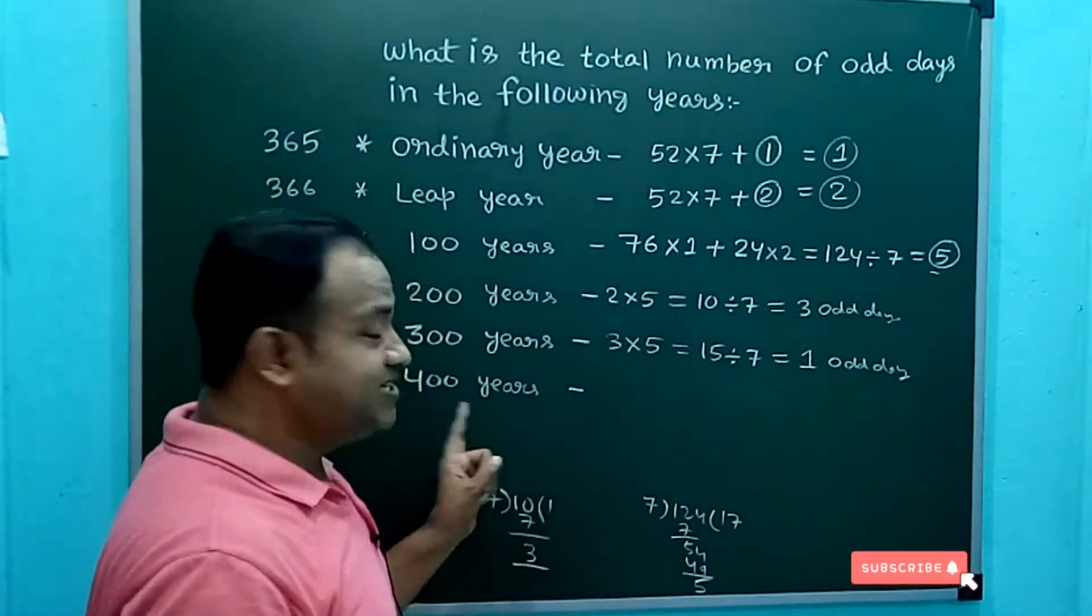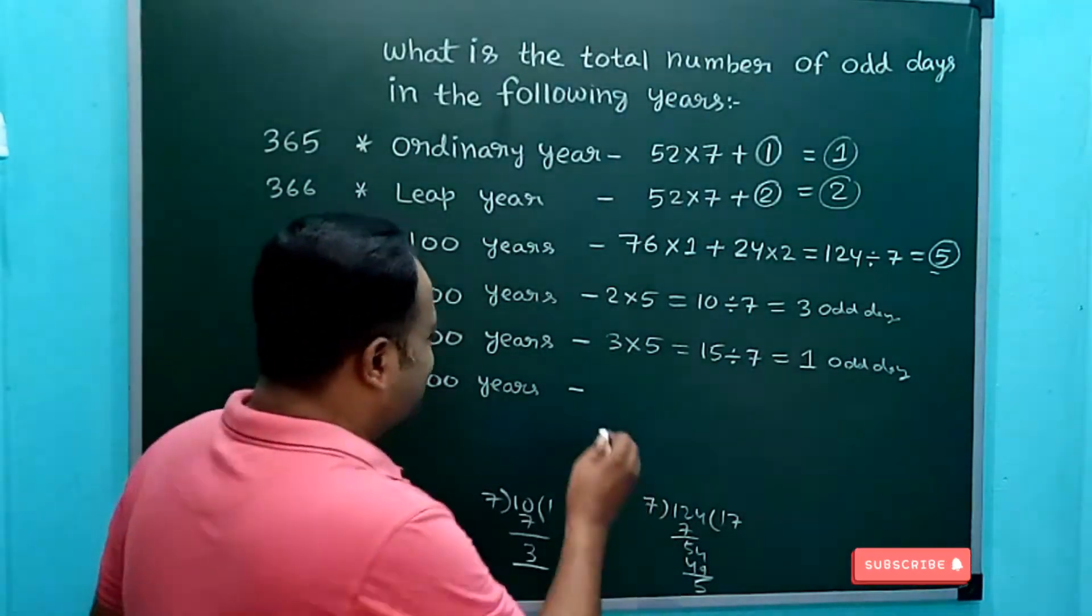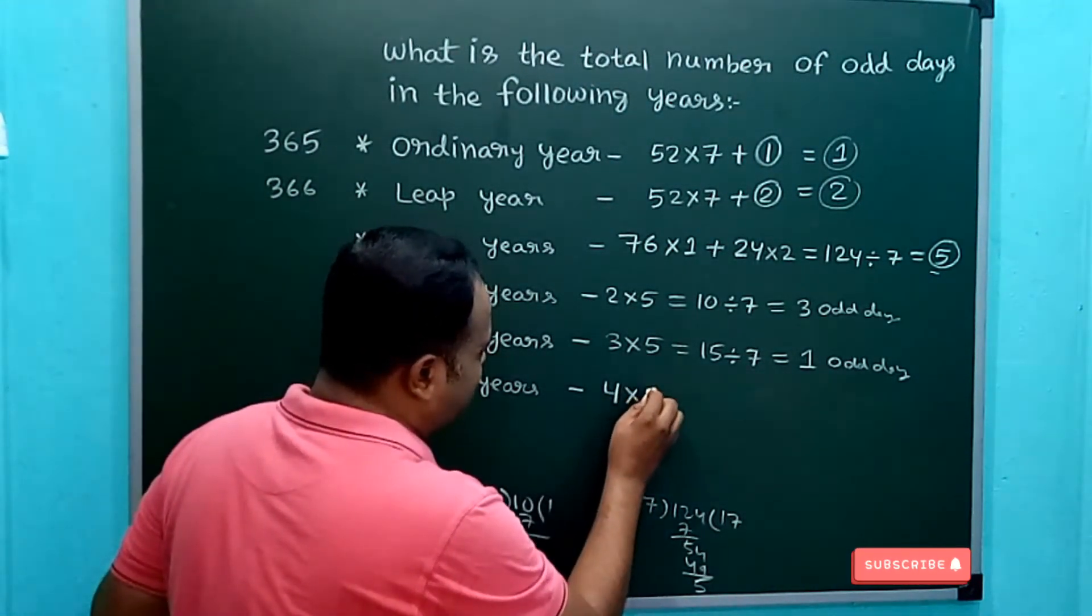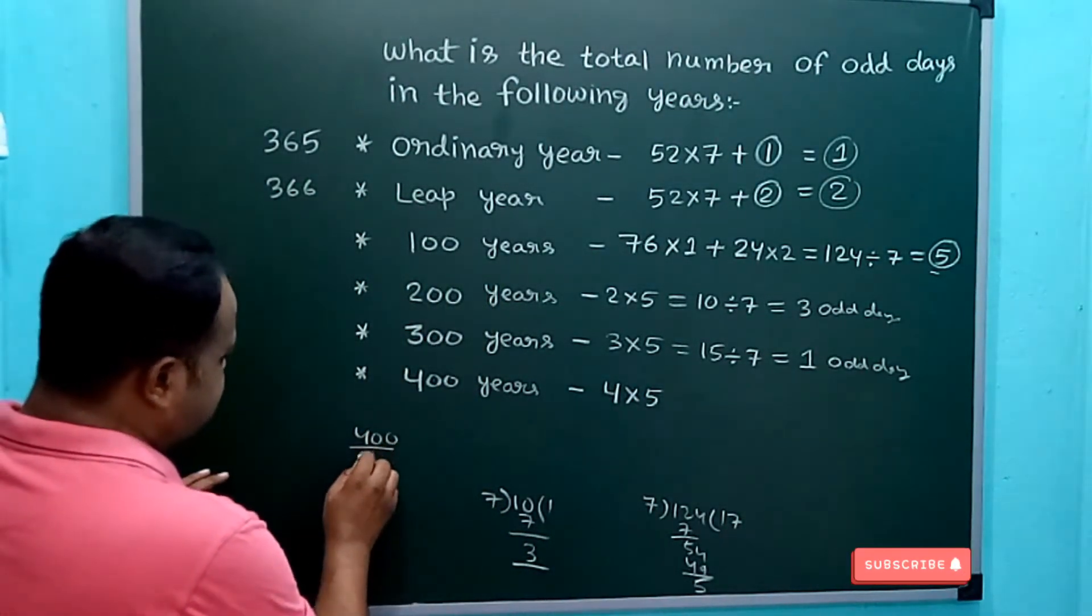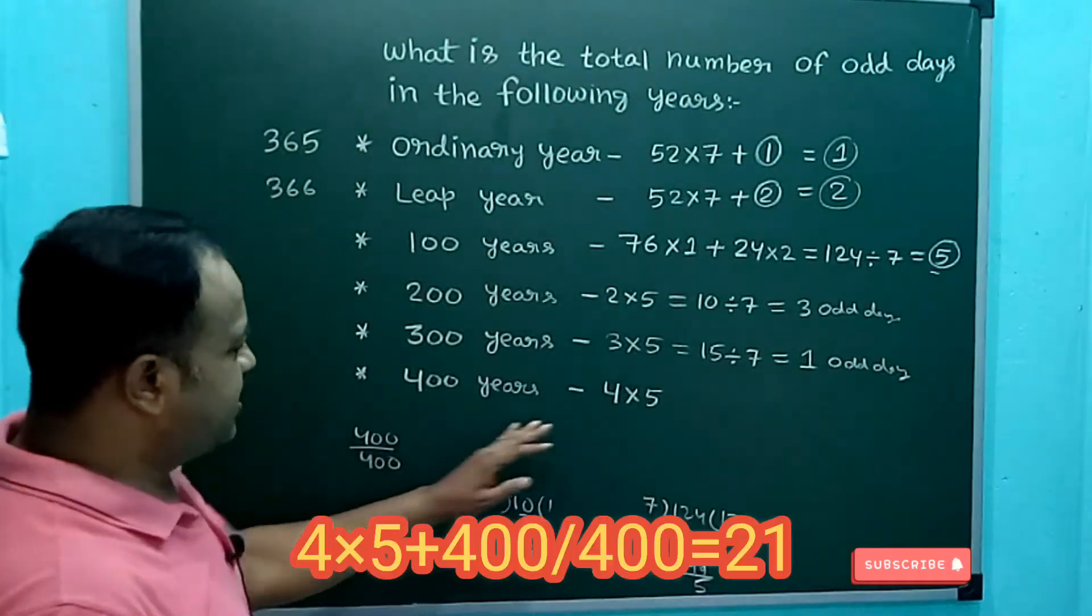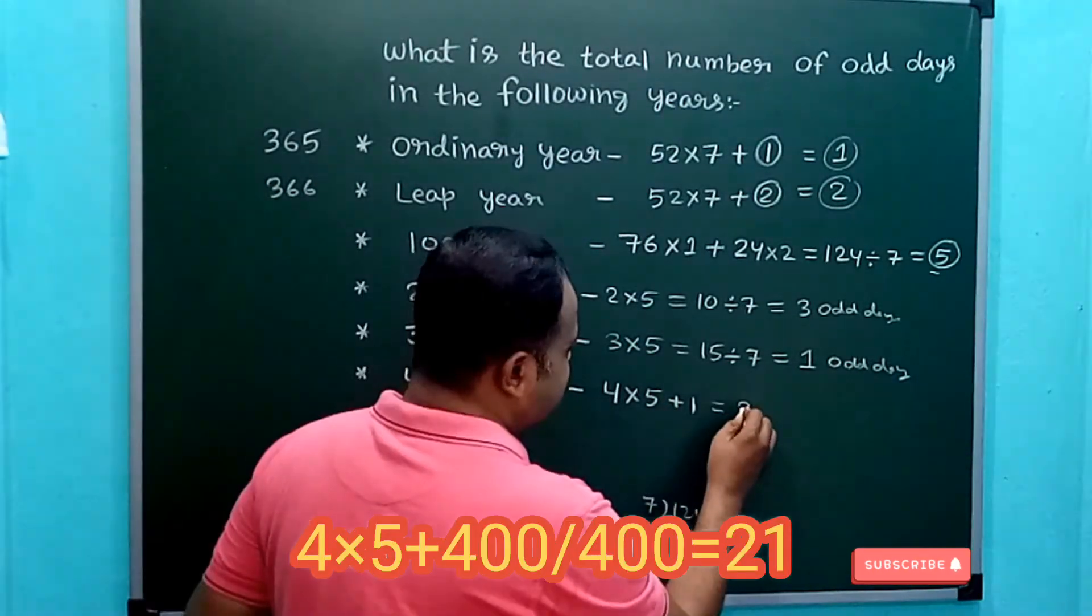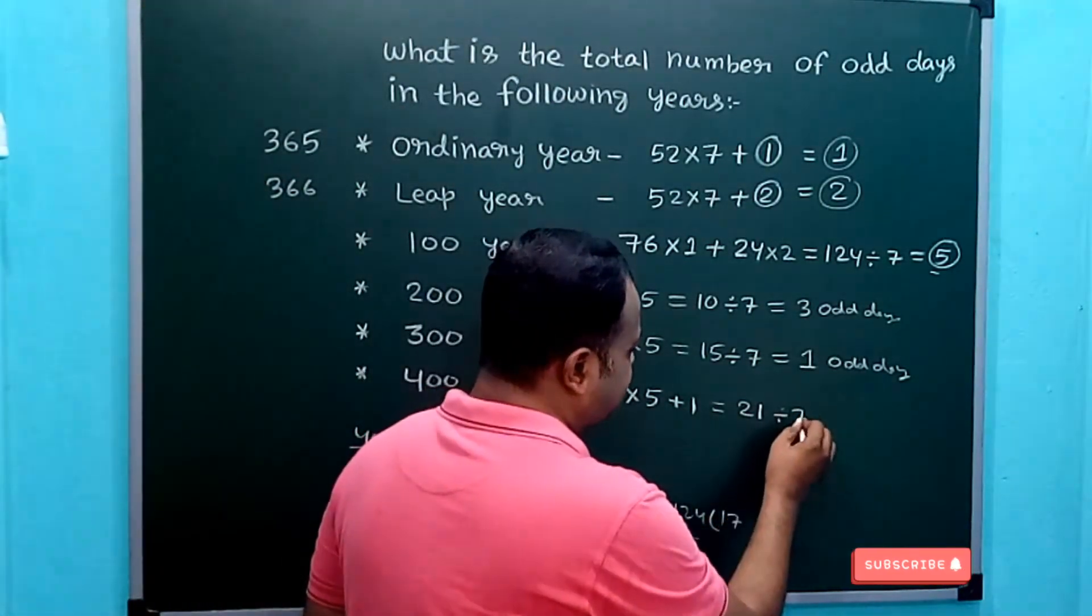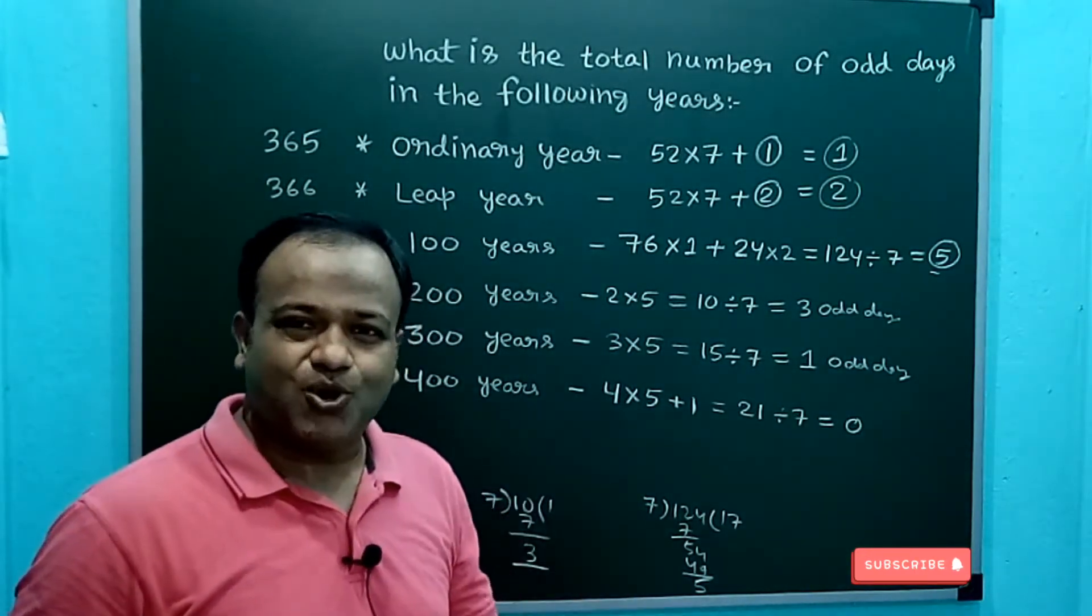Now be very careful while dealing with 400 years, because 400 years is a leap year. So for 400 years, I will multiply 4 × 5. Now 400 is a leap year because 400 can be easily divided by 400. So there are 4 × 5 plus 1, that's 21 odd days. Now 21 when divided by 7, the remainder is 0. So 400 years have 0 odd days.